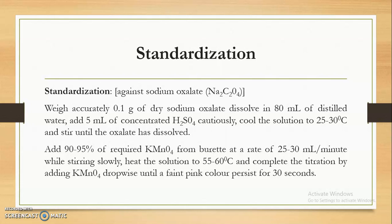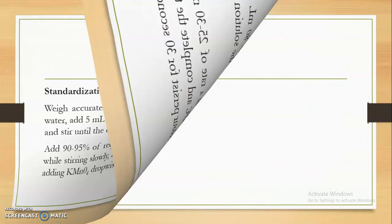Near the end point, a pink color develops but is not permanent. We must check whether the pink color persists for 30 seconds. We heat the solution to about 50–60°C; if the color disappears, continue adding Potassium Permanganate. If the color does not disappear after heating, stop the titration and record that reading.